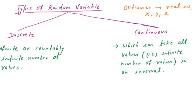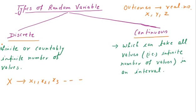We have two types of random variable: one is a discrete random variable and the other is the continuous random variable. If X is a discrete random variable, it assumes values X1, X2, X3, and so on. But if X is a continuous random variable, it will assume values within an interval — that is, X1 is less than X, which is less than X2.